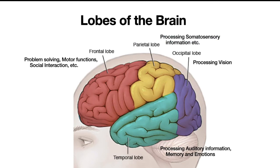Somatosensory information is information that can be sensed by all parts of the body. One example would be pain — you can sense it with your legs, eyes, or nose. Something that wouldn't qualify would be vision, because you can only sense it with your eyes, not your legs.